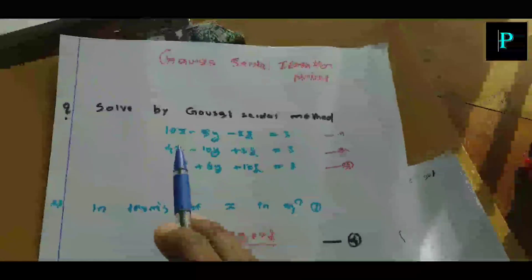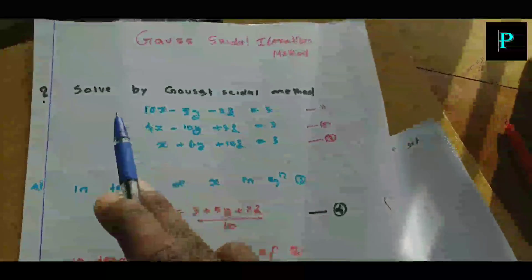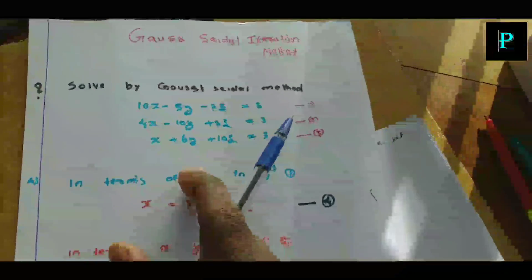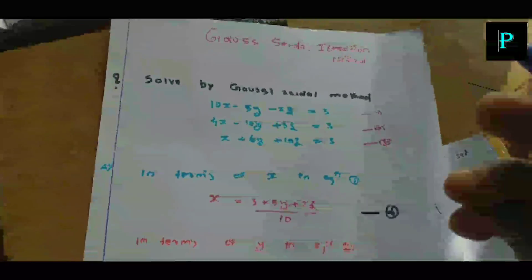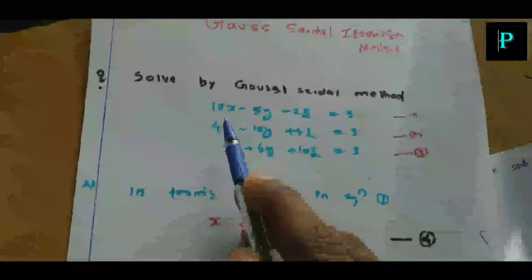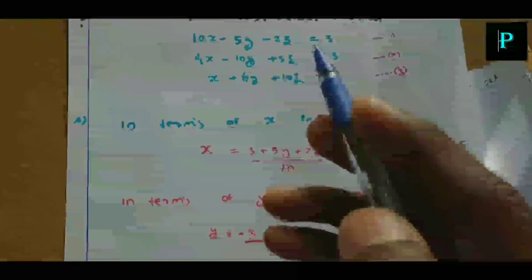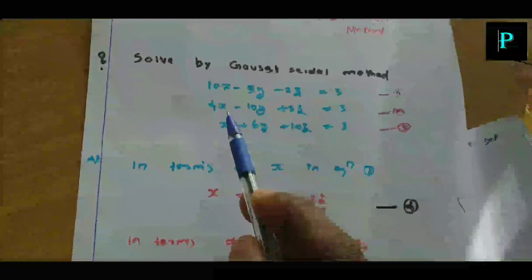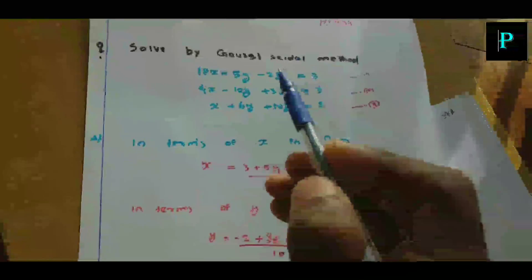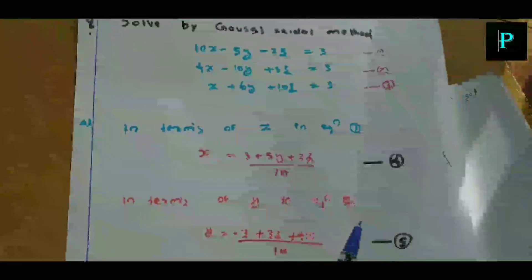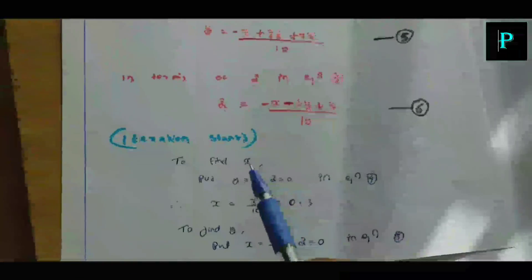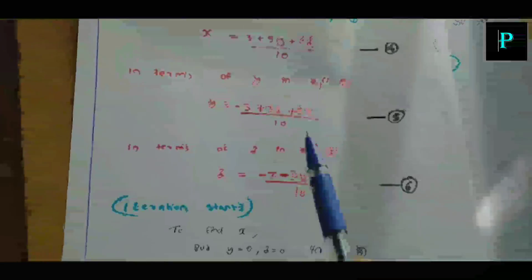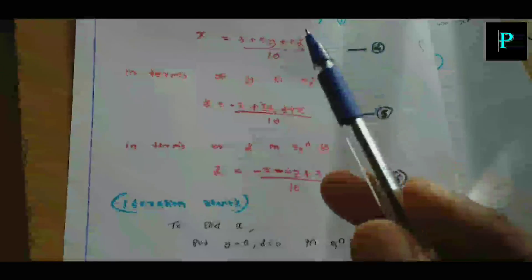Okay, we are going to solve the linear equation using the iteration method, which is the Gauss-Seidel method. We solve the equations: X equal to the equation, Y equal to the equation, Z equal to the equation. We set Y equal to 0 and Z equal to 0 initially.